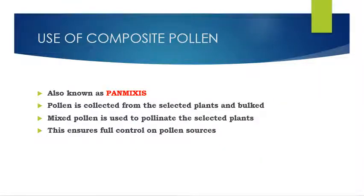Use of composite pollen, also known as poly mix: here the pollen is collected from the selected plants and bulked together. This bulked or mixed pollen is used to pollinate the selected plants, which ensures full control on pollen source and hence the inferior source of pollen is rejected.